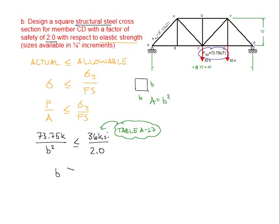Rearranging and solving for B, we find that B must be greater than or equal to the square root of 73.75 kips times 2.0 divided by 36 KSI. This equates to 2.02 inches.